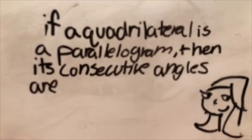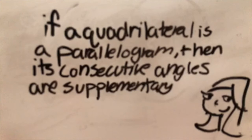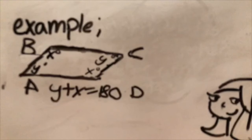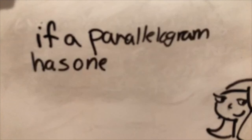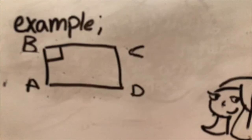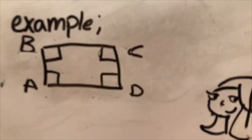If a quadrilateral is a parallelogram, then its consecutive angles are supplementary. So in parallelogram ABCD, X and Y add up to 180 because they are consecutive angles in a parallelogram. So if a parallelogram has one right angle, then it has four right angles. In parallelogram ABCD, if B is a right angle, then C, D, and A are also right angles.